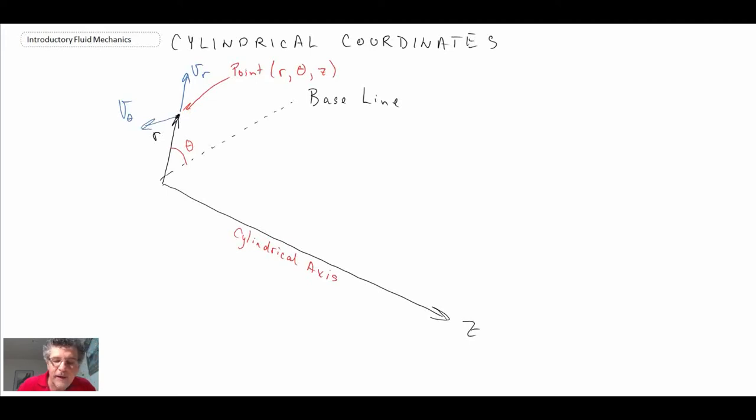And then finally, we can have velocity going along our cylindrical axis. And in this case, that would then be vz. So those would be the three components of velocity that we would have at that particular point.